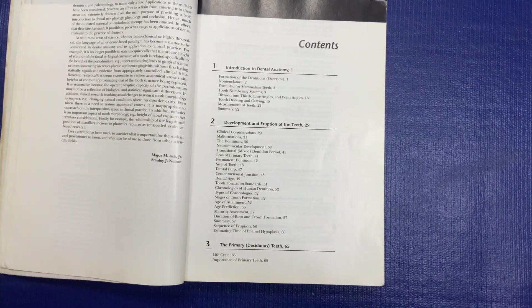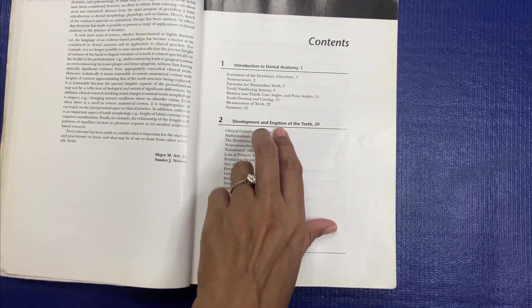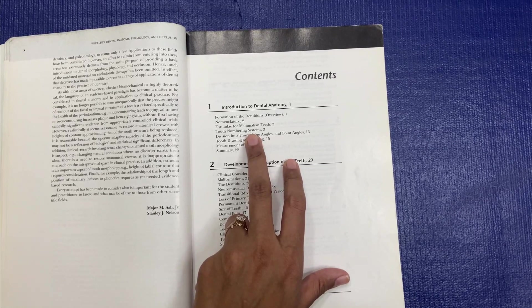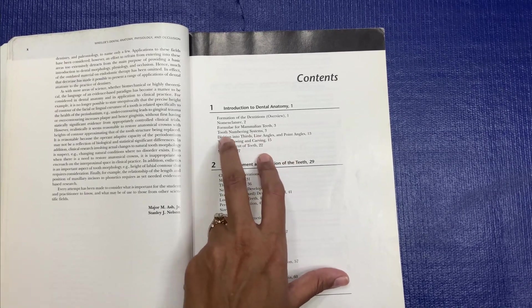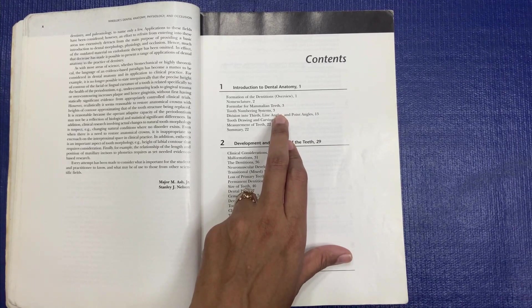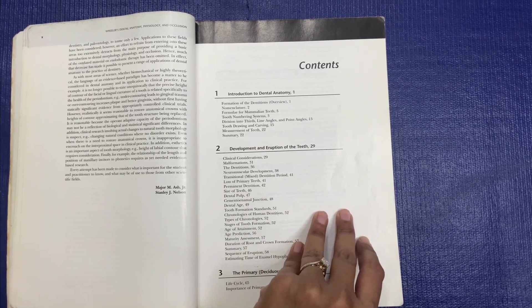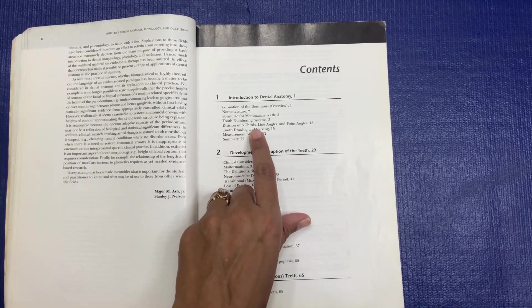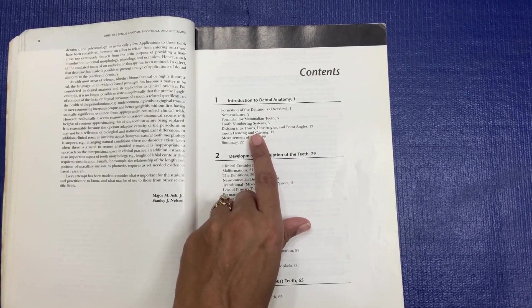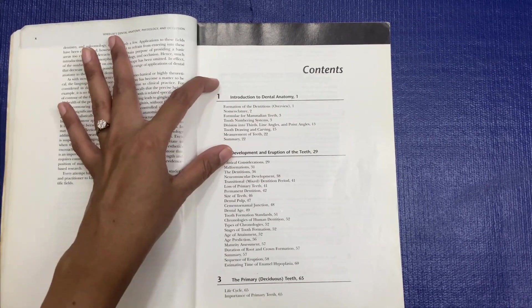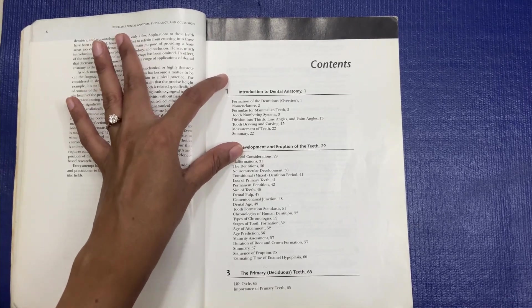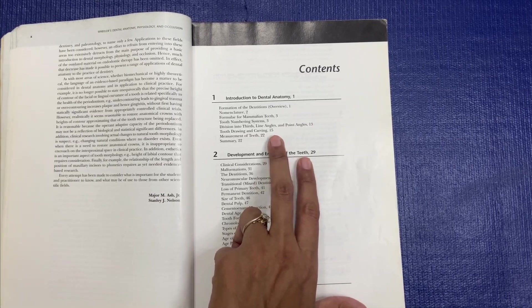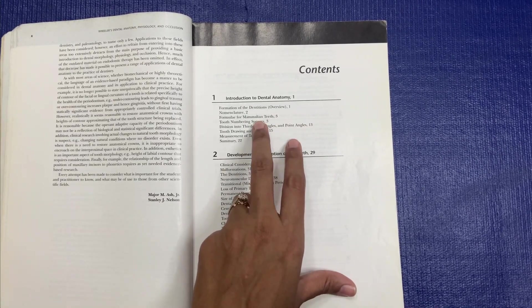Let's see what are the chapters. Number one, there is Introduction to Dental Anatomy, a very important chapter. In this you have to remember very important tooth numbering systems, dental formulae, and what are the ridges, cusps, line angles, point angles. Also, tooth carving basics, how to take measurements, is given in this chapter.